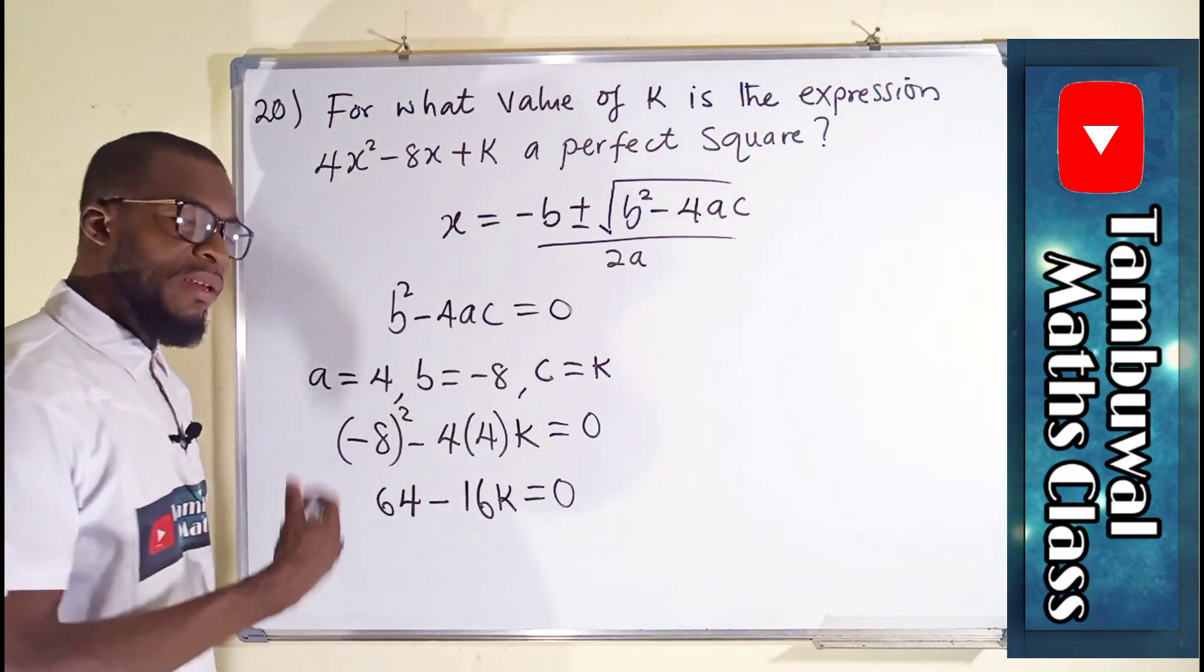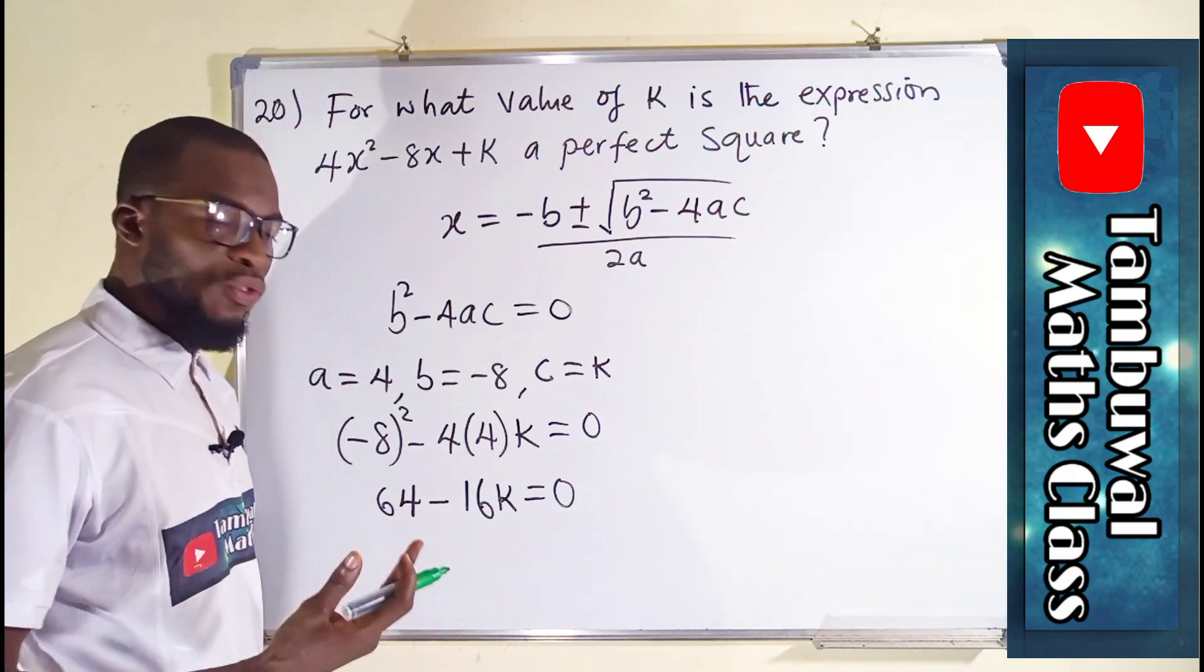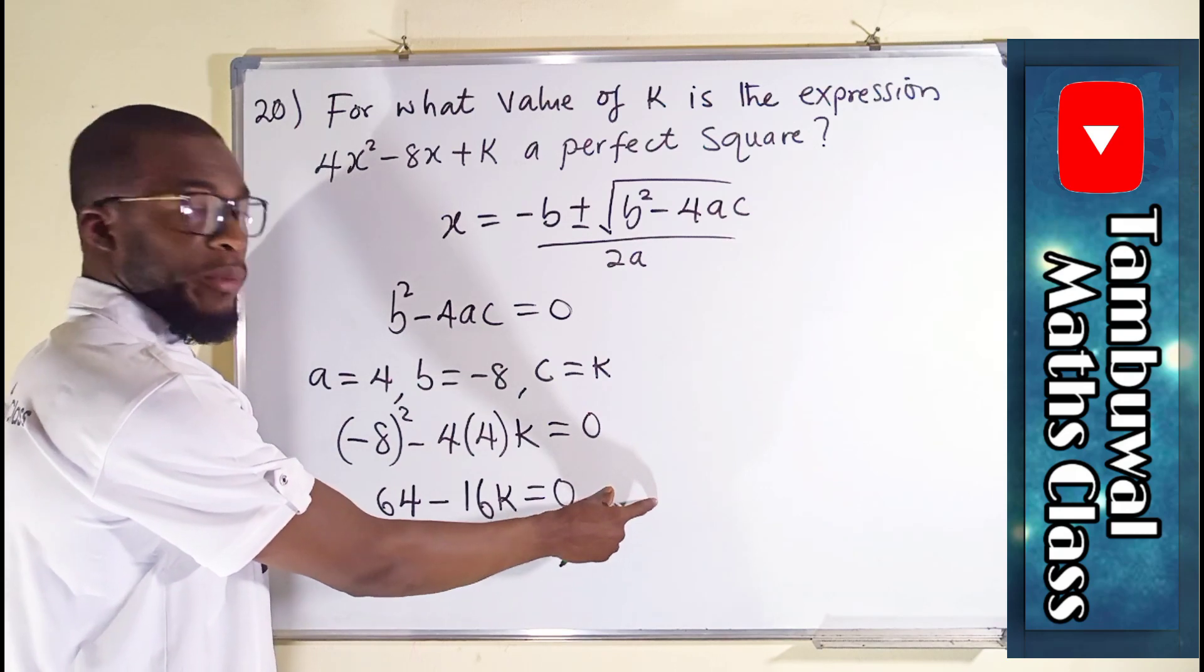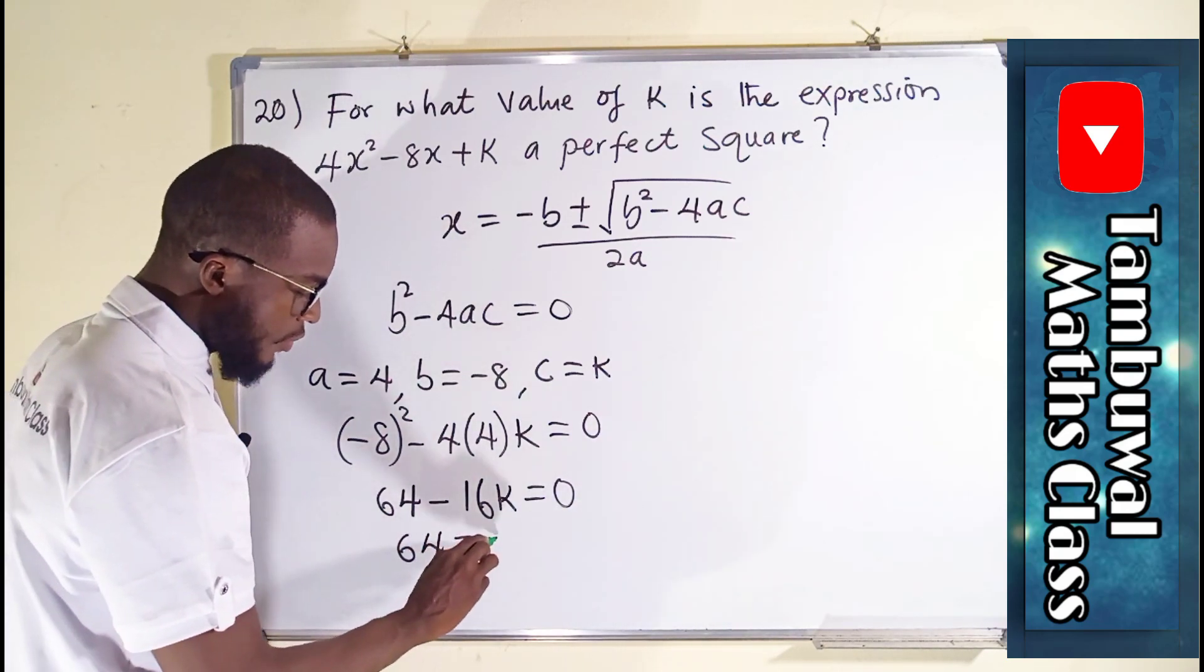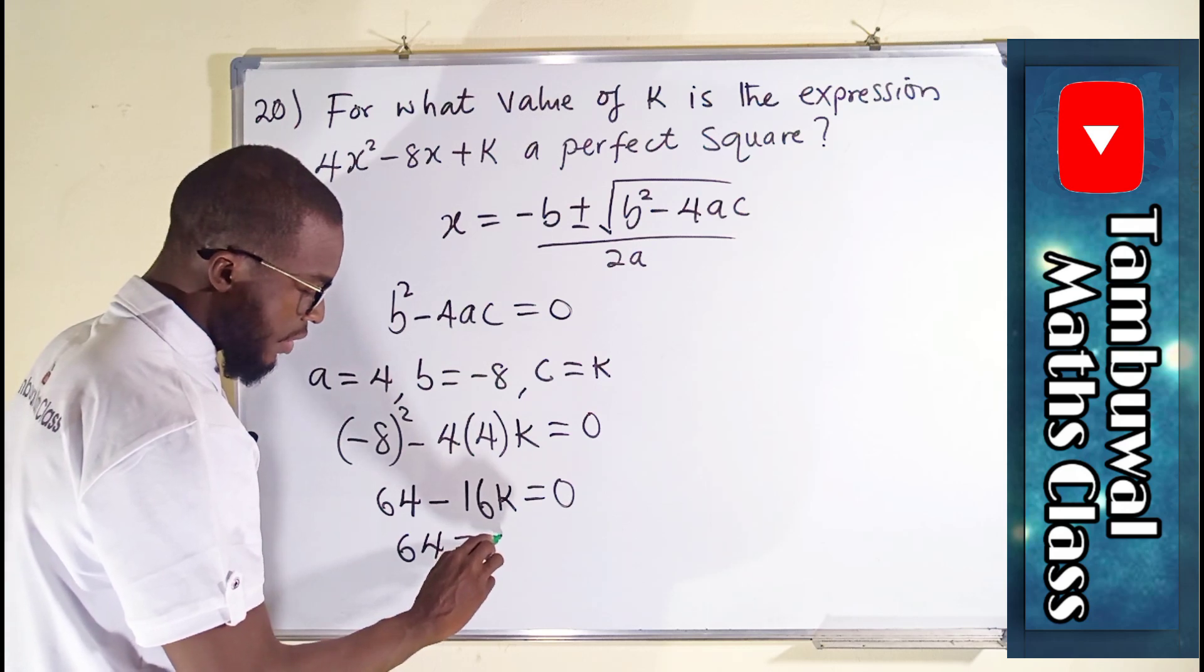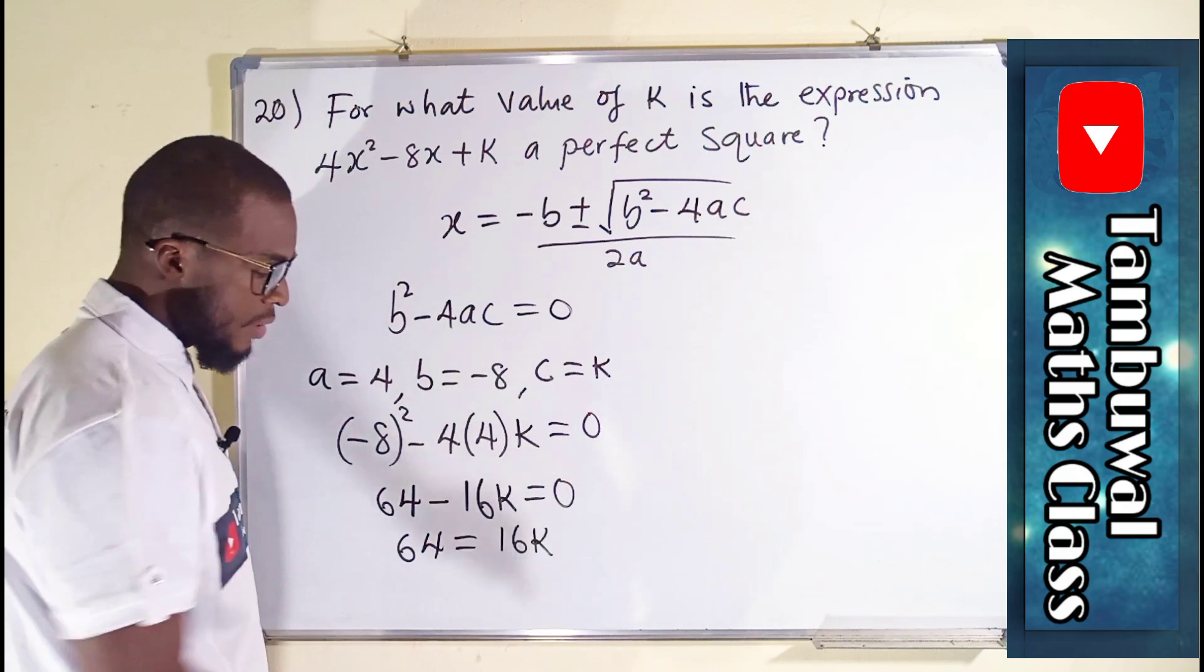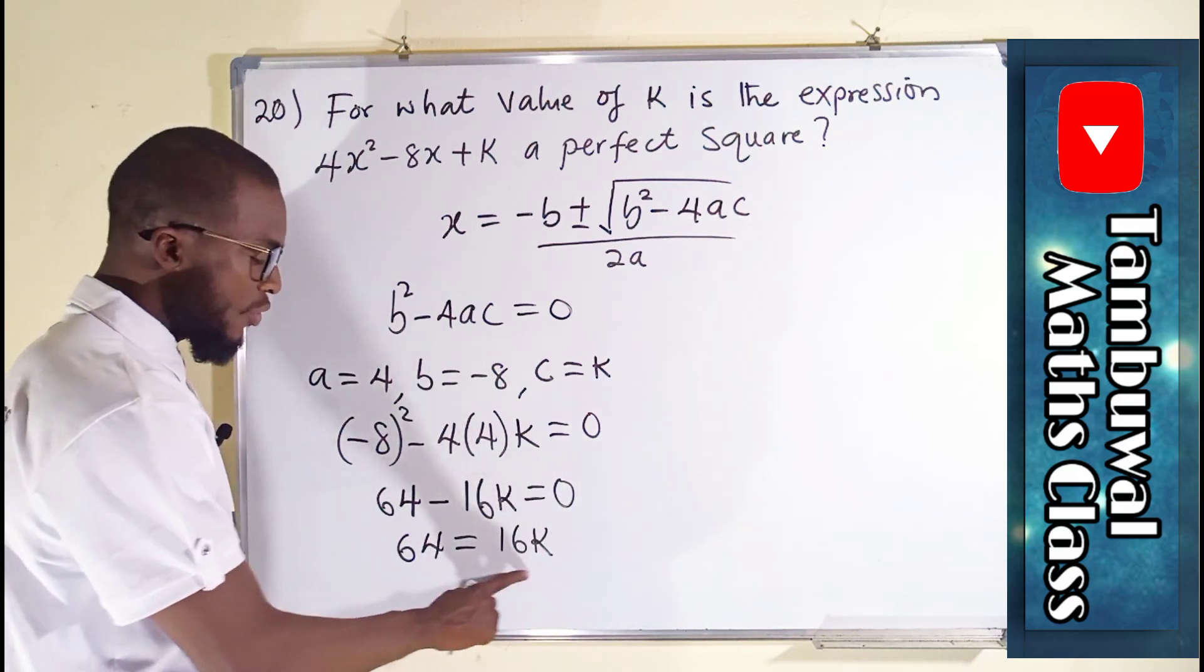Remember, once a term crosses over the equality sign, whatever sign it has will change to opposite. This is minus, once negative 16k crosses over, it becomes positive. So 64 will now be equal to positive 16k. To find the real value of this k, we divide both sides by 16.